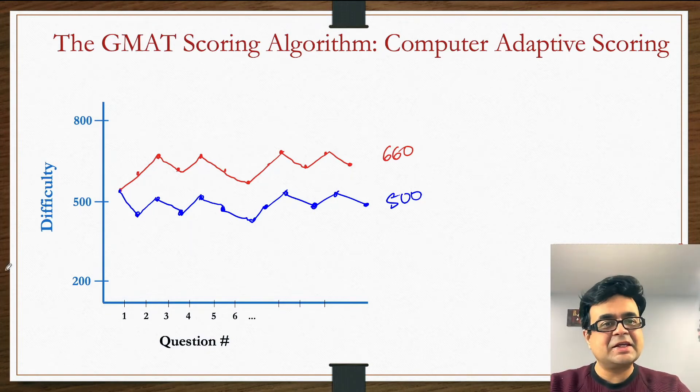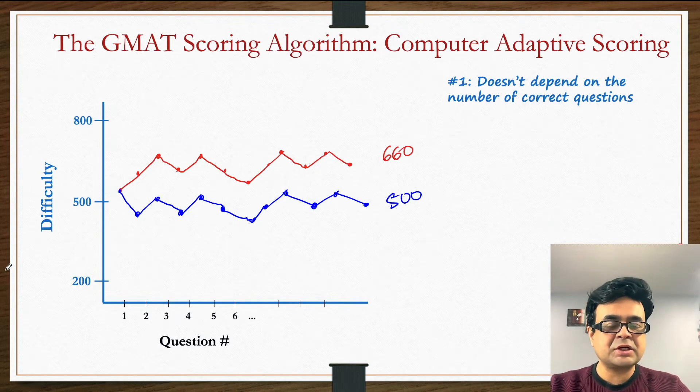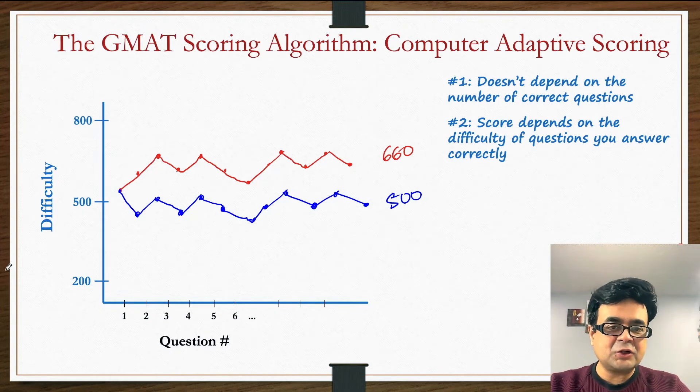This is what computer adaptive algorithm means. As you can clearly see, the scoring doesn't depend on the number of correct questions. For approximately the same number of questions correct, you can get an entirely different score because the scoring actually depends on the difficulty of questions you answer correctly.